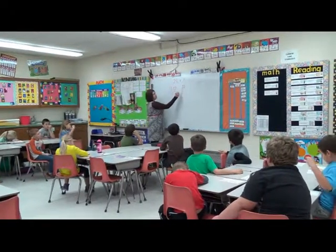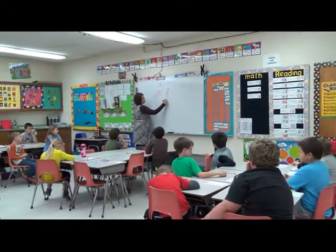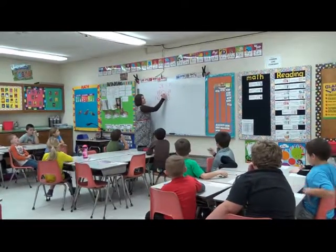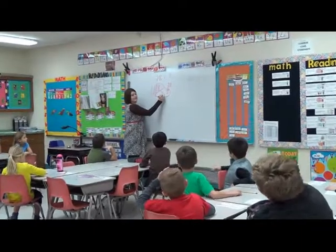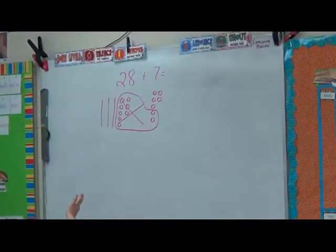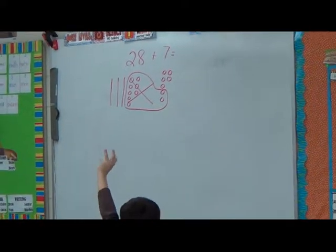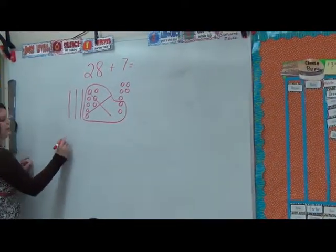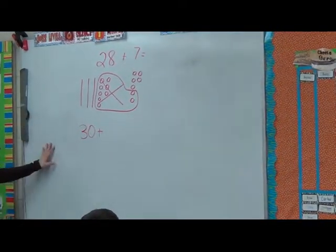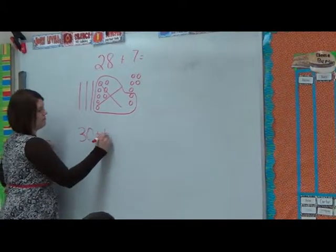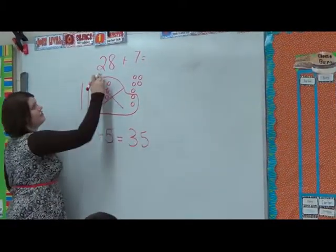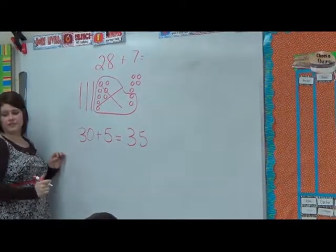Okay, so I'm going to circle 2 from my 7 with my 8 from my 28. And this no longer stays as ones — what does this become? A ten-stick. All right, so who can tell me what my new problem is? Evan? 30 plus 5 equals 35. So what is the answer to 28 plus 7? 35. Very good.